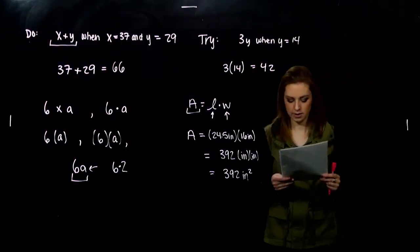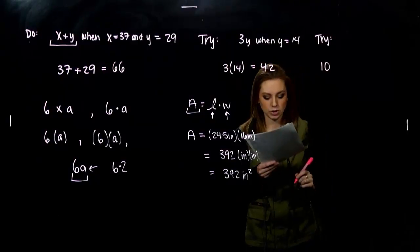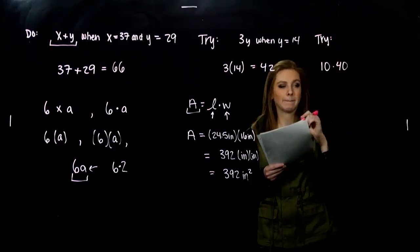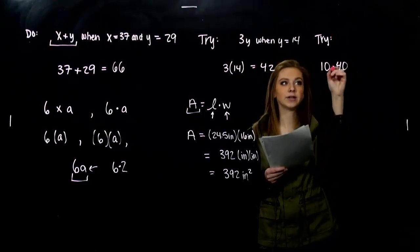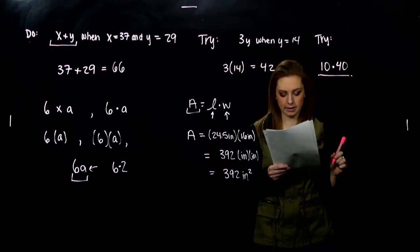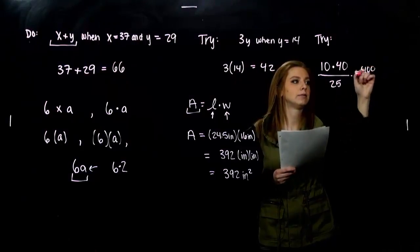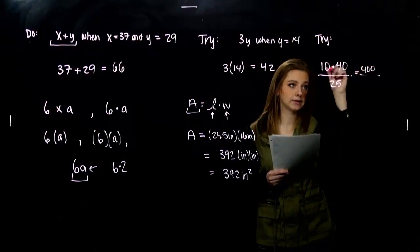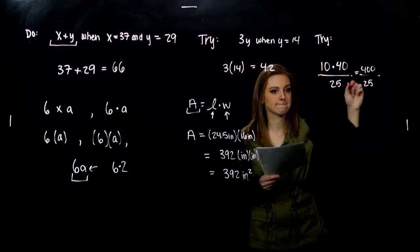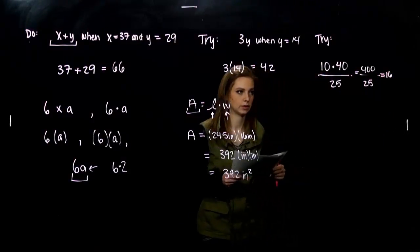So one for you. Evaluate 10P over Q when P is 40 and Q is 25. I'm multiplying 10 times my constant P, its value is 40. So again, we have to explicitly say I have multiplication going on. And I am dividing by Q is 25. So I'm looking at 400. Please excuse my dear Aunt Sally. Multiplication, then the division. So what are we looking at? Coming out of there, 16.